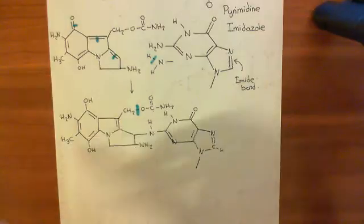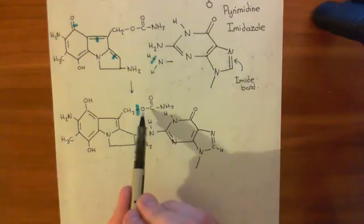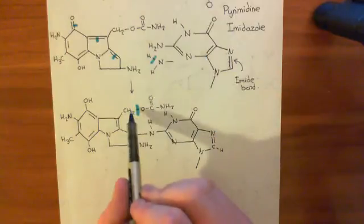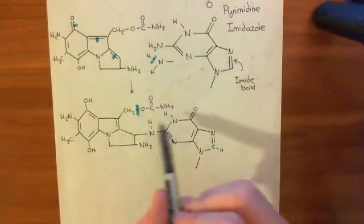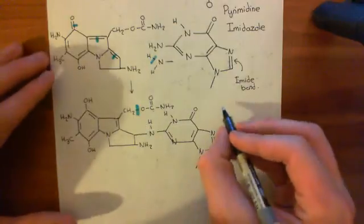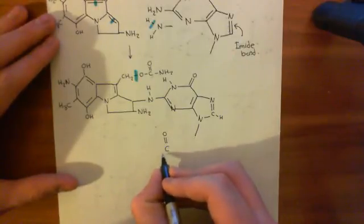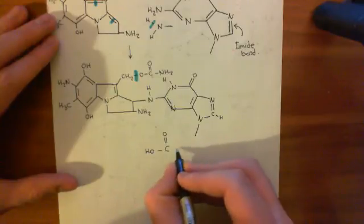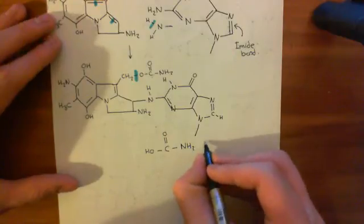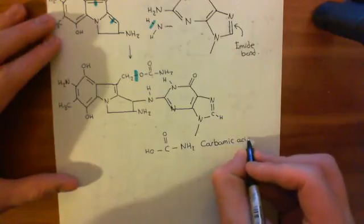That will give this carbon of the methylene group a free electron and also this oxygen a free electron. This carbon will then bind to the nitrogen on the guanine, so this is then going to be linked to another guanine organic base. The hydrogen will link to the oxygen to form this molecule — a carbonyl group there, an alcohol group there making a carboxylic acid group, and then this amino group here. The name of this molecule is carbamic acid.